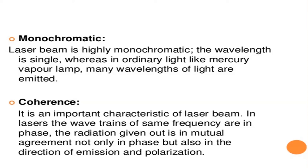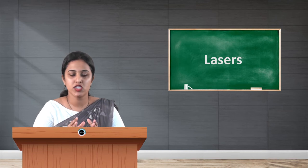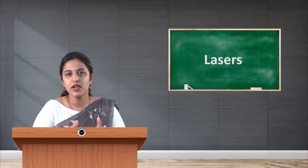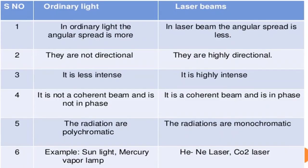The next characteristic is coherence, which is an important property of laser beams. In lasers, the wave trains of the same frequency are in phase. The radiation emitted is in mutual agreement not only in phase but also in direction of emission and polarization. Due to this coherent property, the laser can focus on a very small area, contributing to its very high intensity.